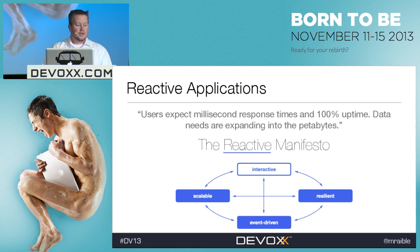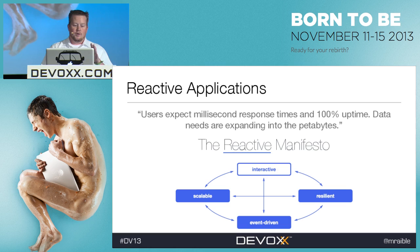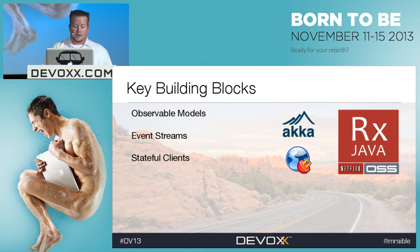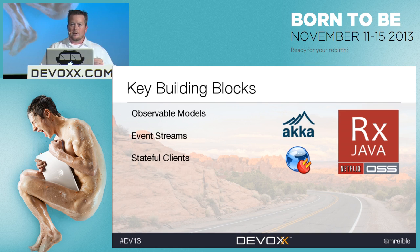With reactive applications, users can expect millisecond response times and 100% uptimes — at least this is what TypeSafe would like to tell you. The data needs are expanding into petabytes. For a lot of people they don't have millions of users, but it's something to be aware of if you want to build a system that's scalable, resilient, and event-driven. Netflix is using it a lot with their RxJava project. Akka allows you to do it in your projects as well — it's observable models, event streams, and stateful clients driven by WebSockets or server-sent events.